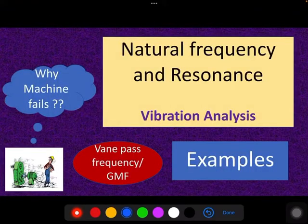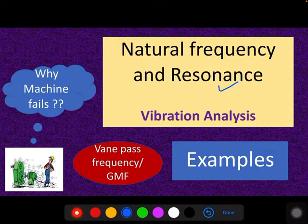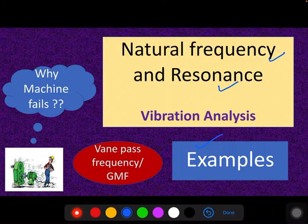Hi friends, welcome to Mega Technical Hub. In the last session, we discussed about the important topic that is resonance. We also studied about natural frequency and what is critical speed — what happens when the natural frequency matches with the forcing frequency. In today's session, we will discuss some examples of resonance, what happens when vane pass frequency or harmonics frequency matches with the natural frequency, and what is the behavior of the vibration for any component.